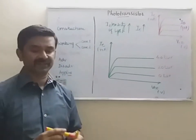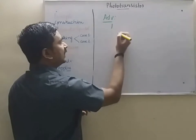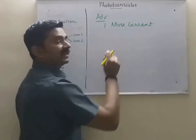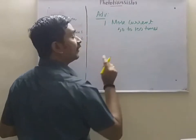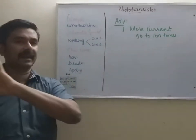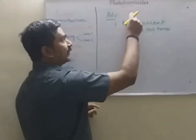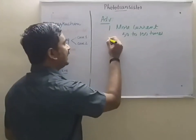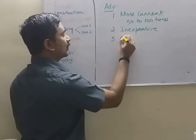The advantages of the phototransistor are: first, it is able to produce more current — when compared with the photodiode, the current produced is 50 to 100 times larger. We already know that a phototransistor equals a photodiode plus a transistor amplifier, so it generates much more current than a photodiode. Second, it is inexpensive. Third, it has a quick response time.